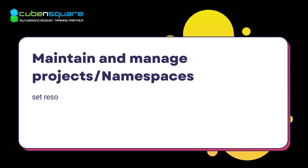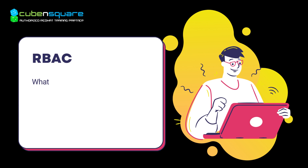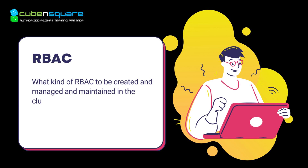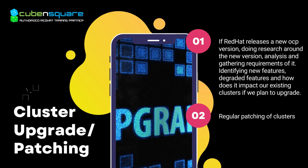He maintains namespaces and projects, sets resource quotas and limit ranges, and works with project templates — one of the major differences in OpenShift compared to Kubernetes. He also determines what RBAC roles to create and manage for administrators, consumers, operations teams, and all stakeholders. Additionally, he is responsible for installing and managing operators in the clusters.